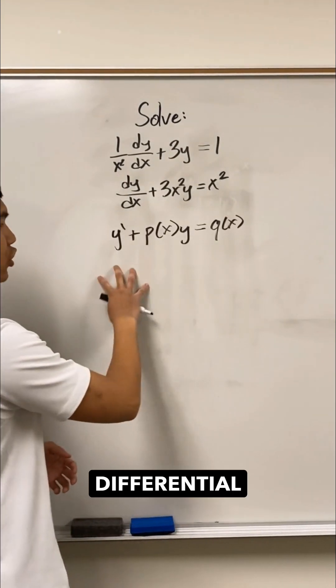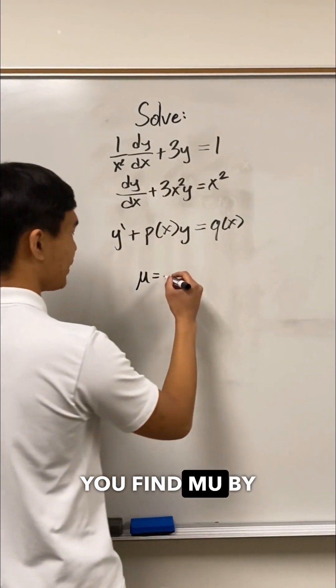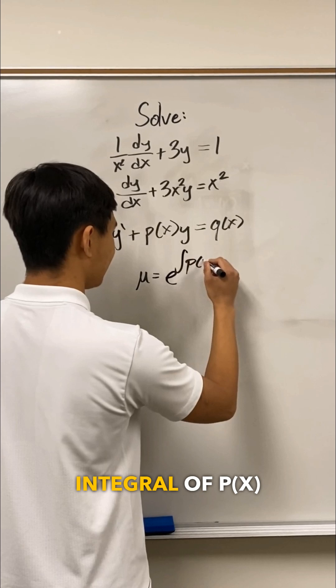If you have a general differential equation like this, the function you multiply is called mu, and you find mu by taking e to the integral of p of x dx.